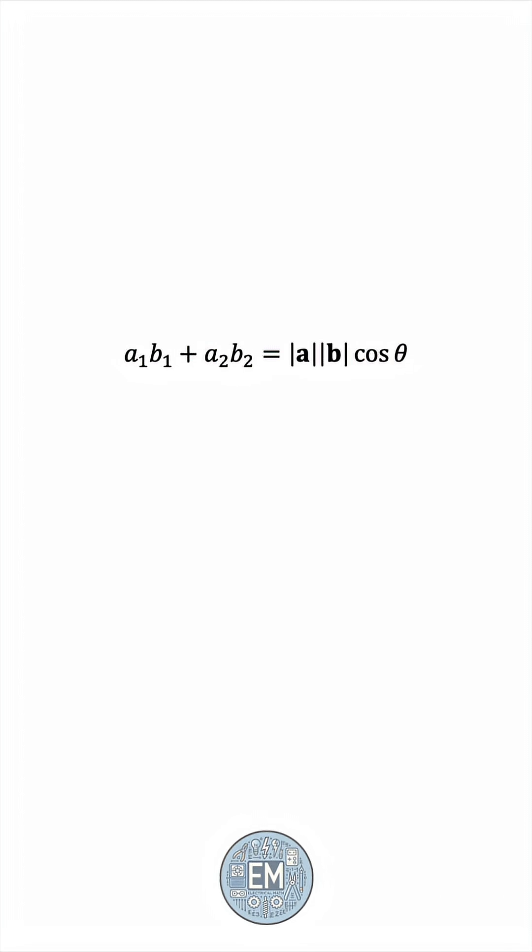And we now see a1b1 plus a2b2 on the left-hand side. And this is nothing but the algebraic definition of the dot product. With these two vectors a and b, the dot product is defined as the sum of the products of the respective components. So the left-hand side is nothing but the dot product between a and b.